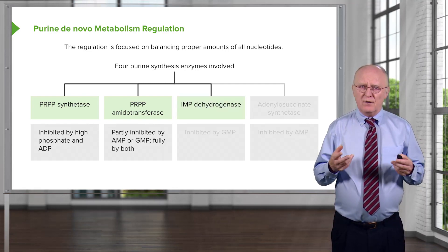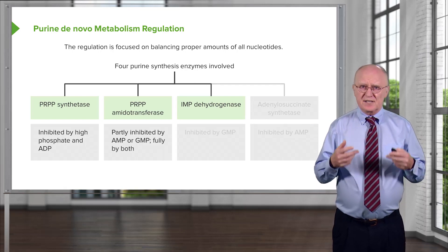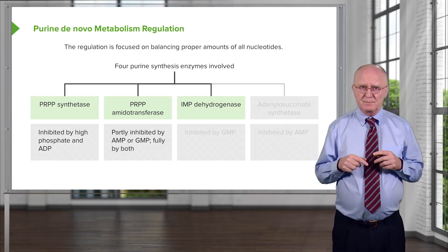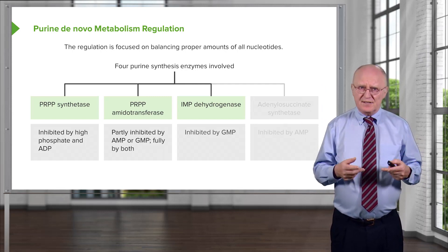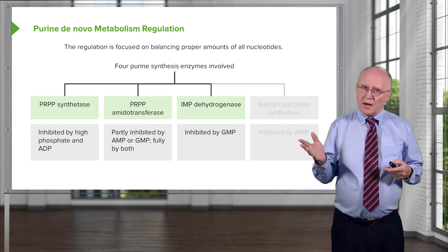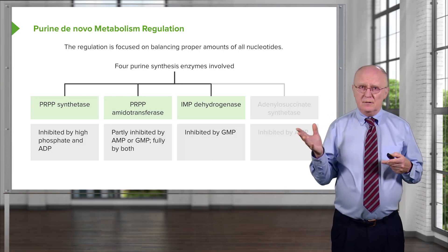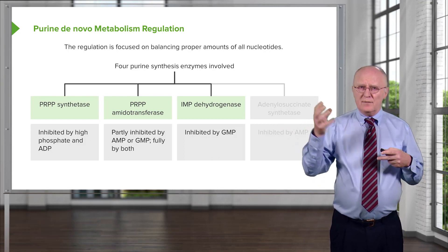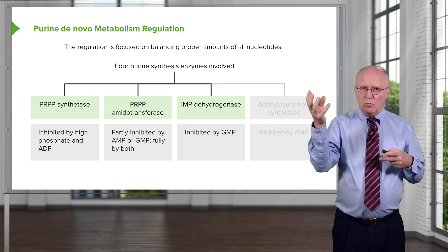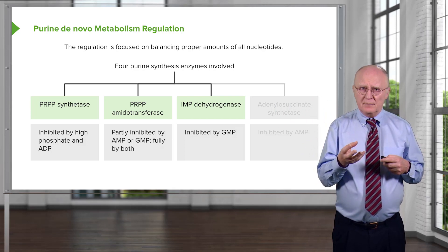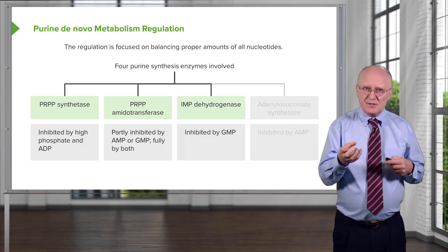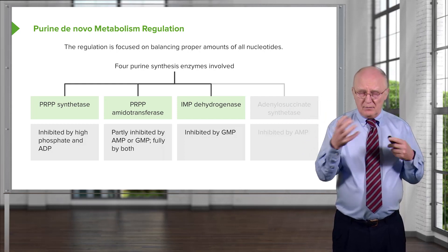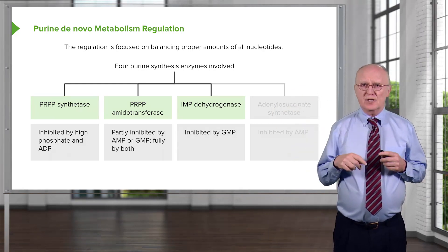The third enzyme is the one involved in the synthesis of the guanosine nucleotides — that was the pathway that went upwards. This enzyme is inhibited by GMP, a product of the reaction. This makes sense: if you have too much guanine nucleotides, then you want to turn off that synthetic pathway, and you turn it off at the branch point. So the branch is inhibited by one of its products, in this case GMP.